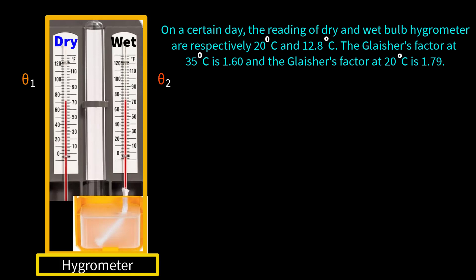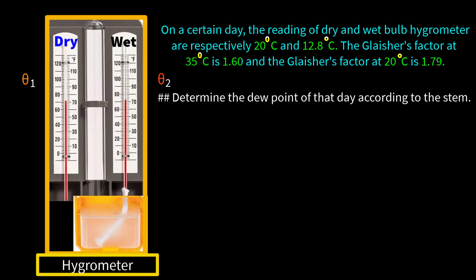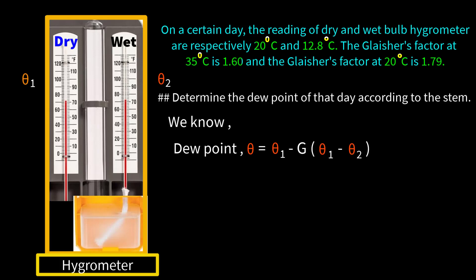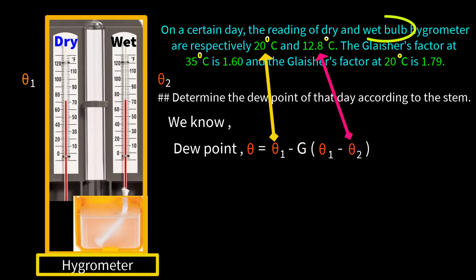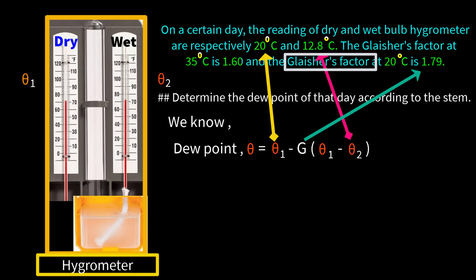Now we will determine the dew point. Problem: On a certain day, the readings of the dry and wet bulb hygrometer are respectively 20°C and 12.8°C. The Glacier's factor at 35°C is 1.60 and at 20°C is 1.79. Determine the dew point. From the stem: θ₁ = 20°C, θ₂ = 12.8°C, and G = 1.79 — using the dry bulb temperature of 20°C.